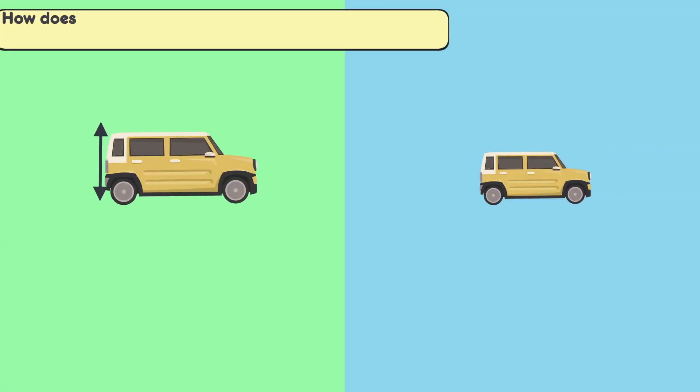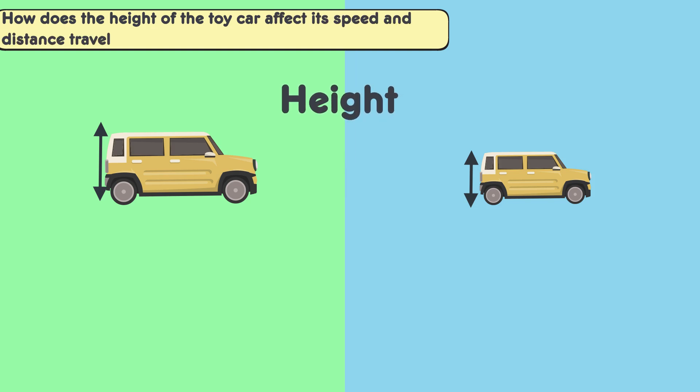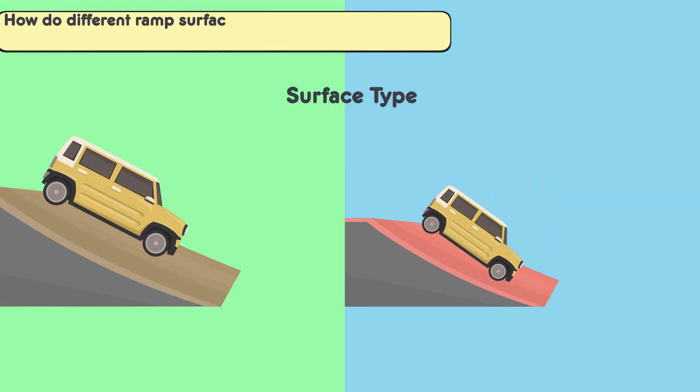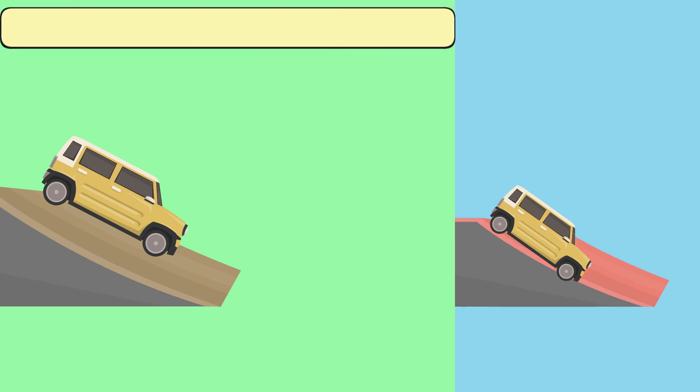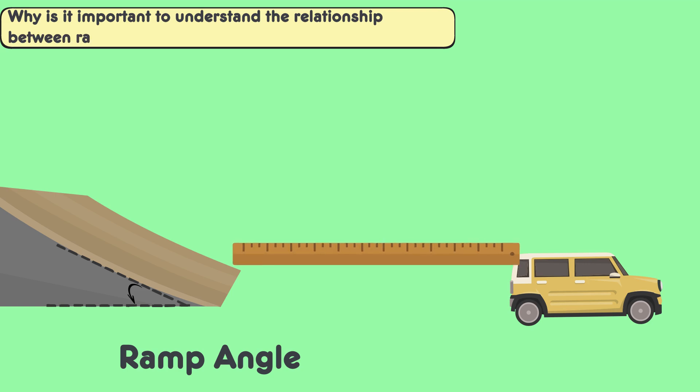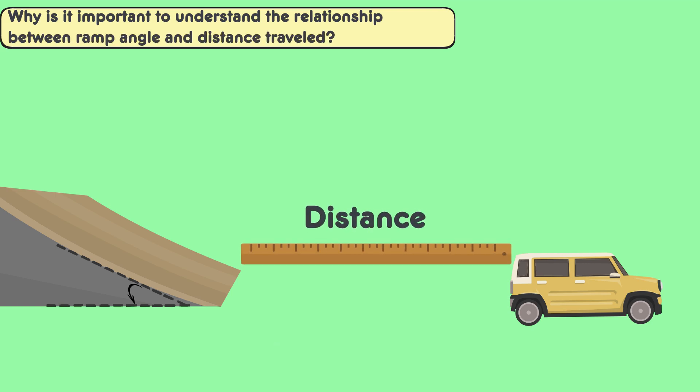Here are some guiding questions for answer choices. How does the height of the toy car affect its speed and distance traveled? What insights does this provide about its center of gravity? How do different ramp surfaces impact the toy car's movement? What does this tell us about friction and resistance? Why is it important to understand the relationship between ramp angle and distance traveled? How does this measurement illustrate that relationship?